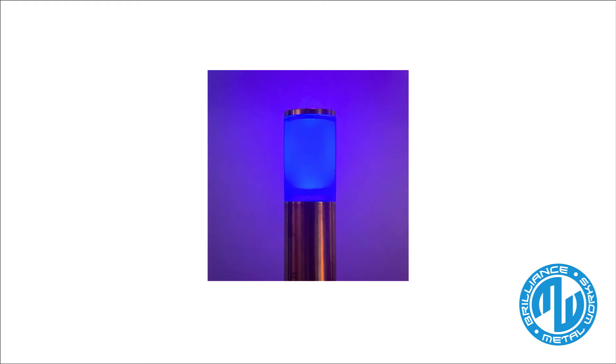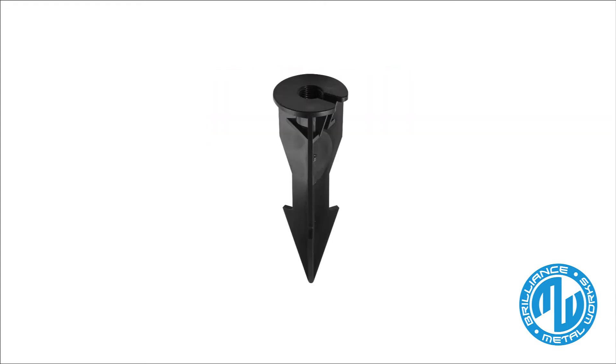This bollard fixture comes complete with a Brilliance Chameleon MR16 lamp and an ABS mounting stake. You will be able to use this bollard for paths, area, and garden accent lighting. It is the perfect way to add color to your pathways and walkways.